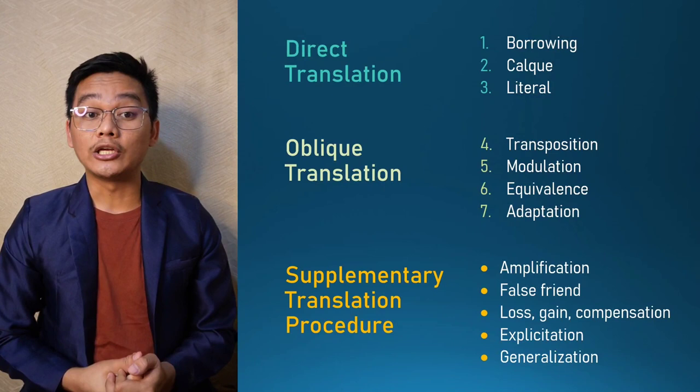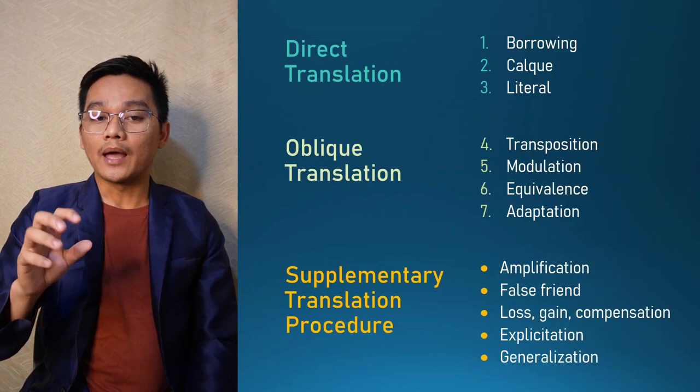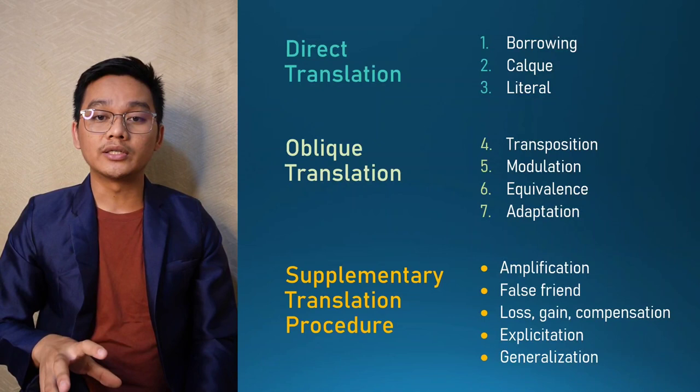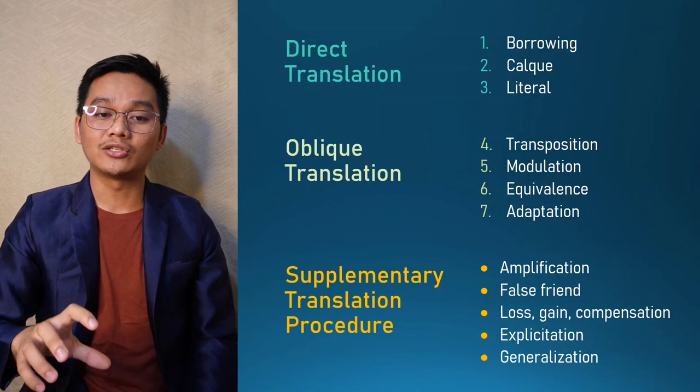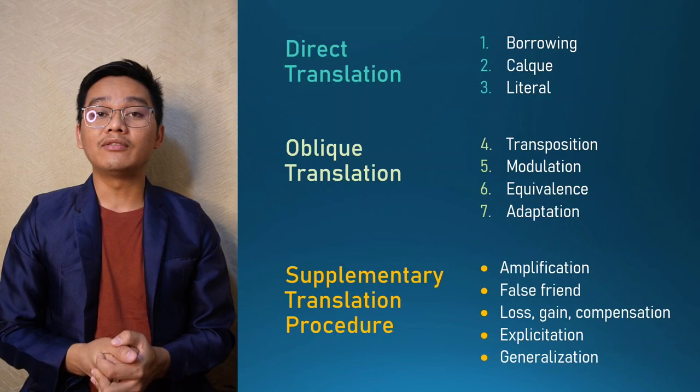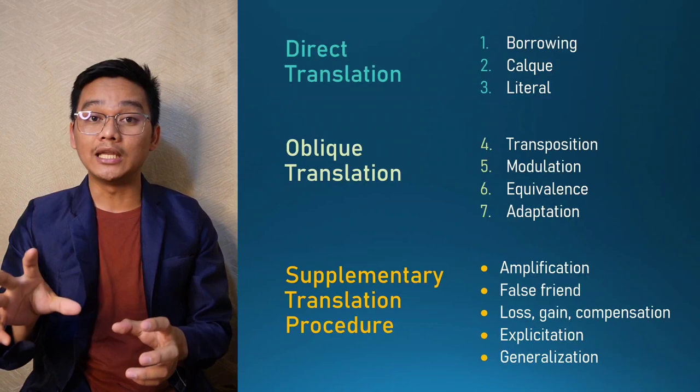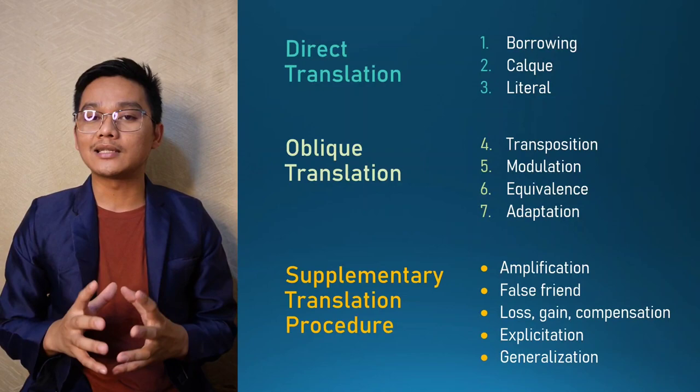According to Vinay and Darbelnet, there are two major strategies in translation: direct translation and oblique translation. Direct translation covers borrowing, calque, and literal translation. Oblique translation covers transposition, modulation, equivalence, and adaptation. It is important to note the significant difference between a strategy and a procedure: a strategy is the overall orientation of a translator towards the text.